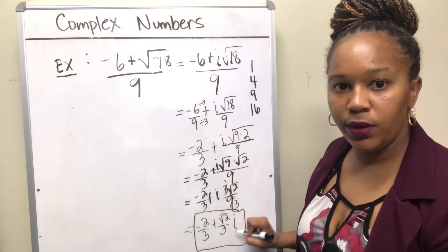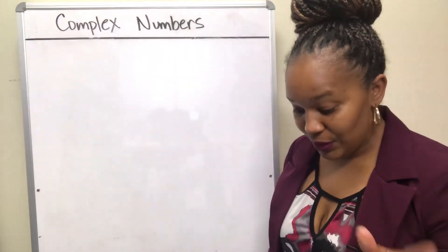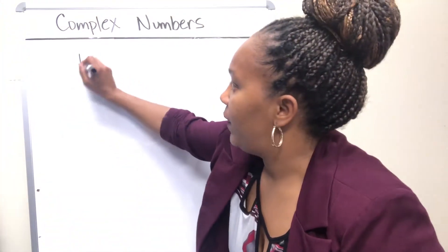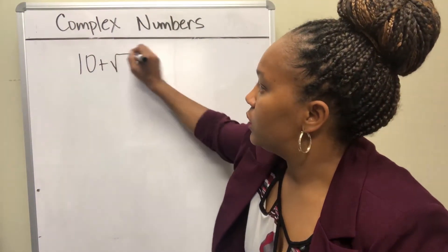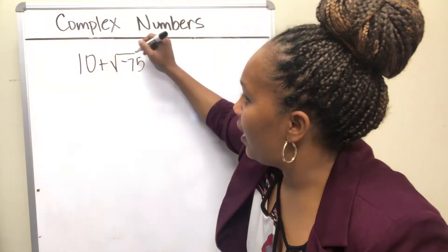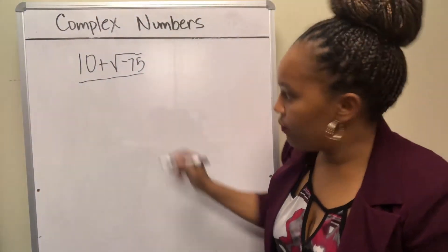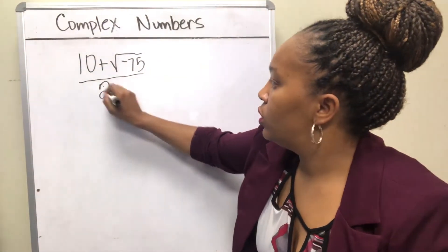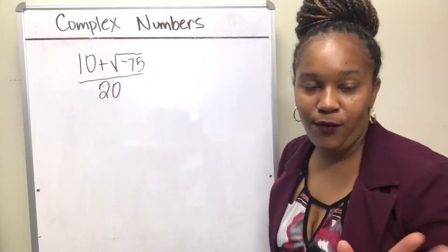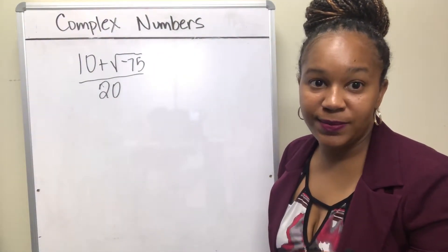Now you try this one. Simplify (10 + √(-75)) all over 20 and write it in complex form. Pause the video and see what you get.